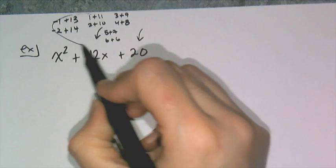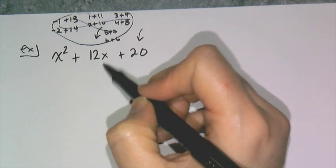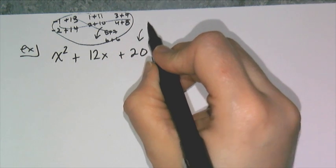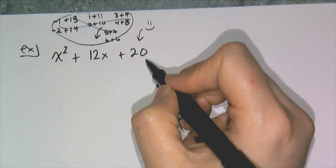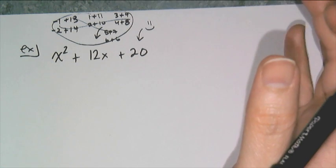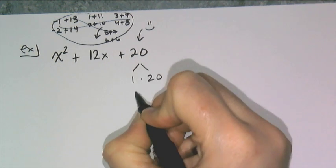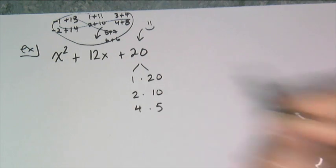So I don't like looking at it as that, breaking up that middle term. I like to think of factoring as looking at what multiplied together gives you 20, because there are far fewer possibilities. Because I either have 1 times 20, 2 times 10, or 4 times 5.